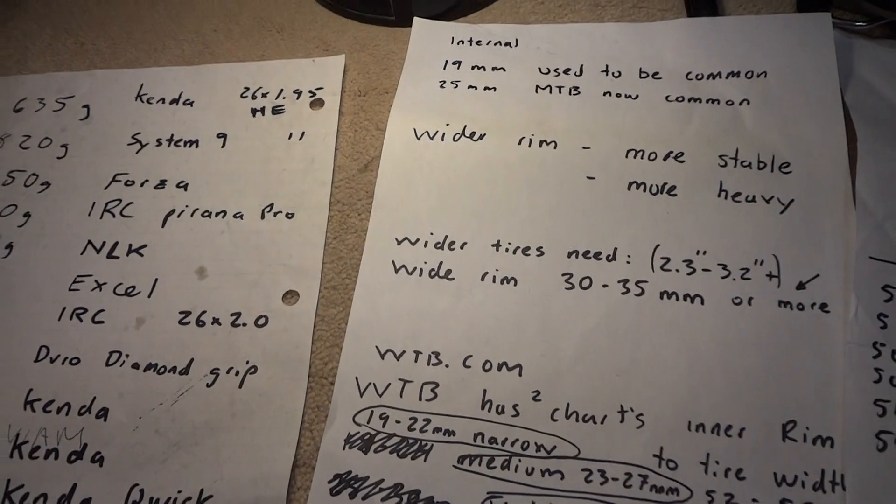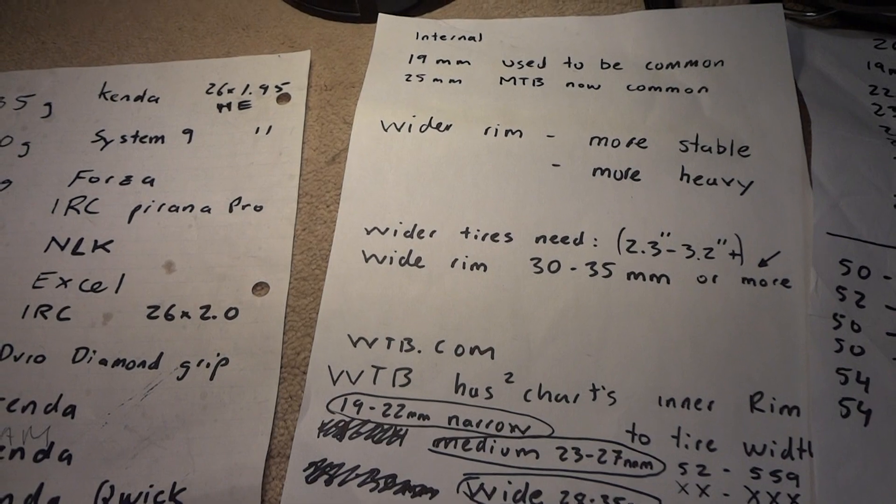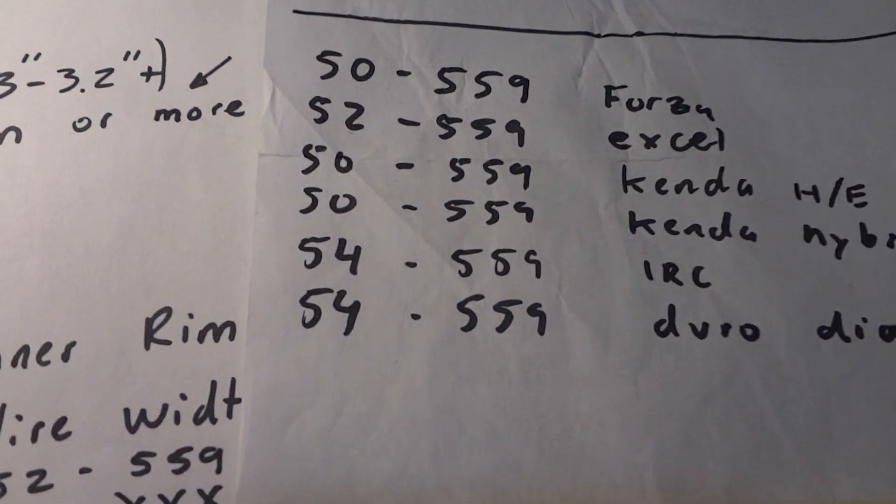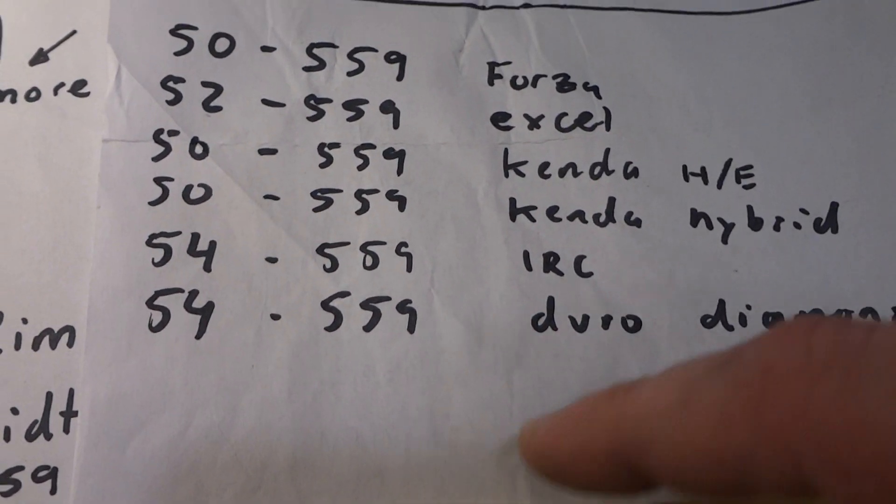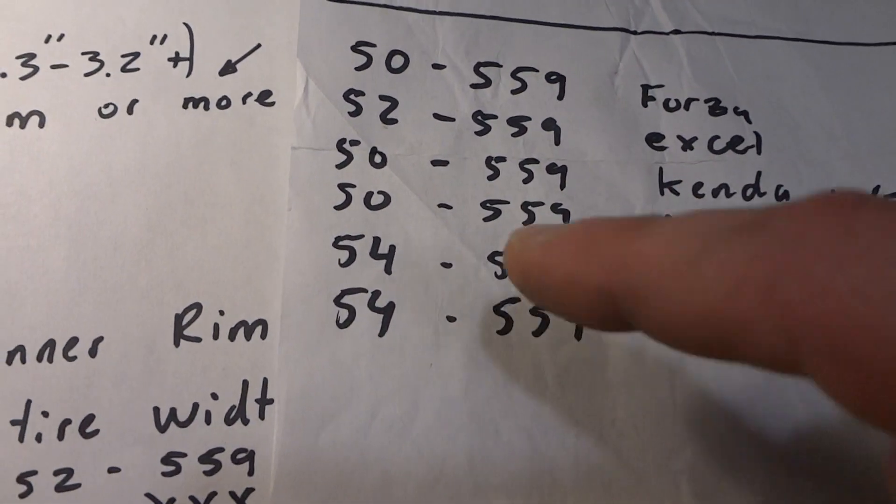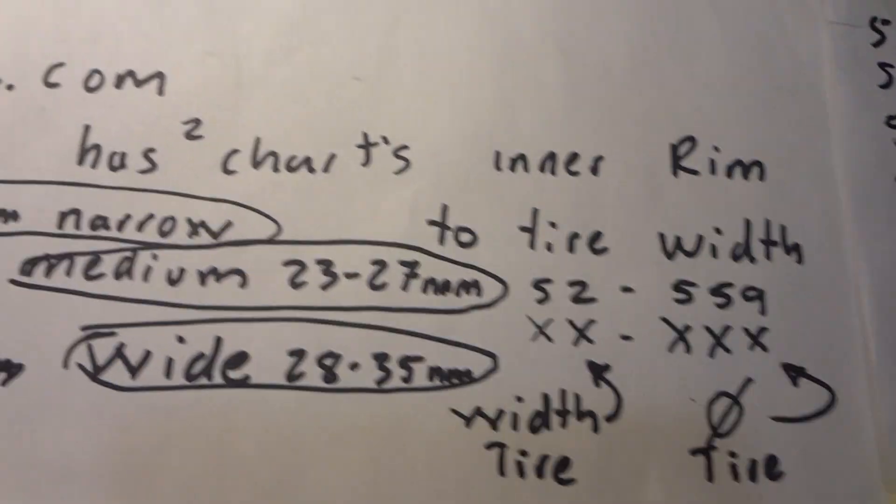A lot of these tires like IRC, they don't even mention that number. So that number right here, the first two digits by the 559, only some of these guys are mentioning this number at all, but most of them have it. So what that number means, I checked this site WTB.